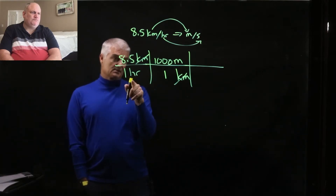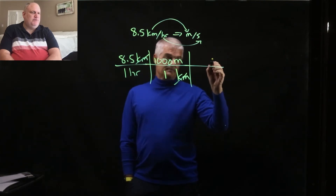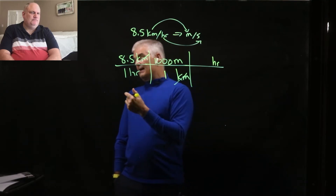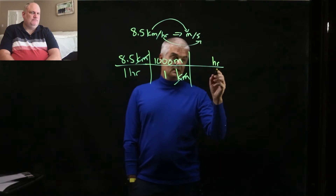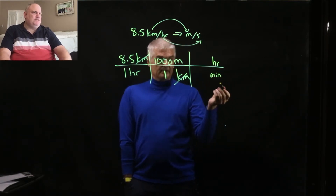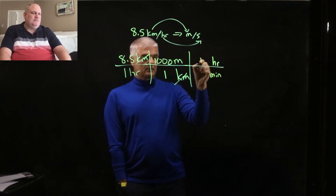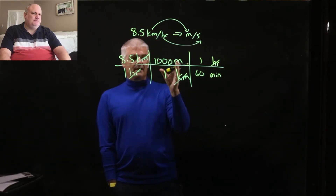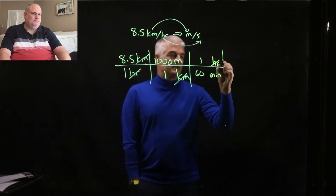The hour's on the bottom, so I put an hour on the top. On the bottom, most students don't know how many seconds are in an hour, but they know how many minutes there are in an hour. An hour is bigger, so there are 60 minutes in an hour — my hours cancel. But now I have meters per minute, and I don't want meters per minute, I want meters per second. So I add another fraction.